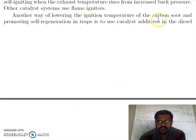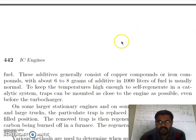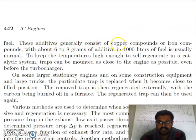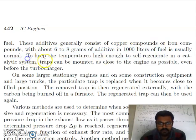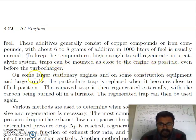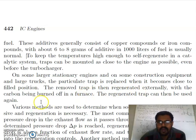Another way of lowering the ignition temperature of carbon soot and promoting self-regeneration in traps is to use catalyst additives in the diesel fuel. These additives generally consist of copper compounds or iron compounds, with about 6 to 8 grams of additive per 1000 liters of fuel. Traps can be mounted as close to the engine as possible, even before the turbocharger. On some large stationary engines and on construction equipment and large trucks, the particle trap is replaced when it becomes close to fully loaded. The removed trap is then regenerated externally, with the carbon burned off in a furnace, and the regenerated trap can then be used again.